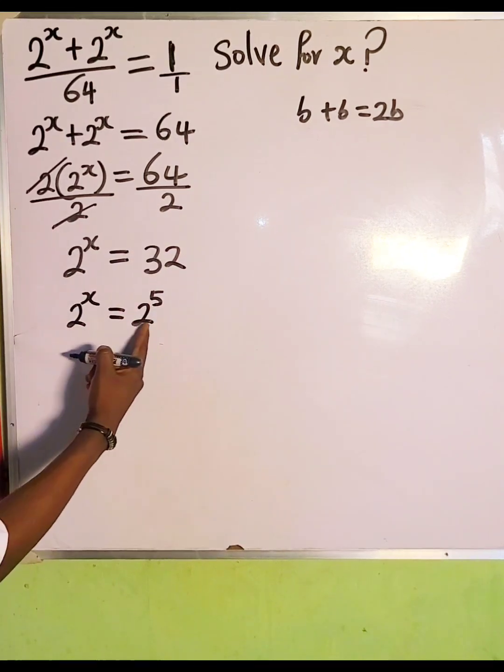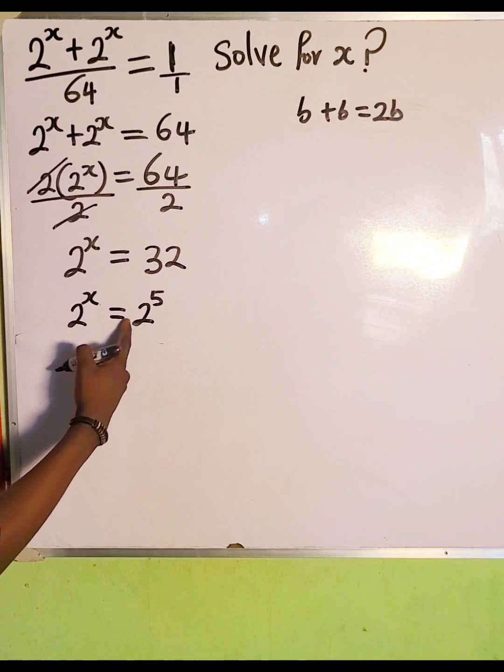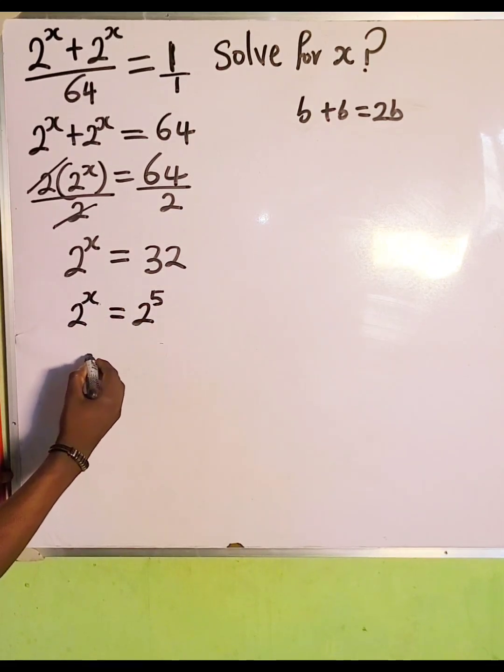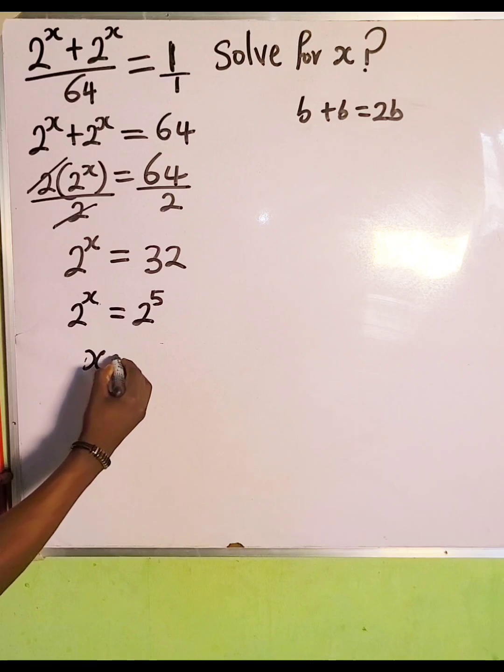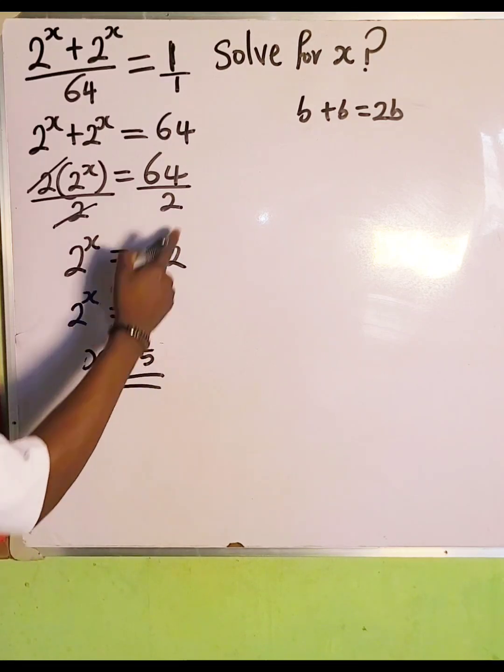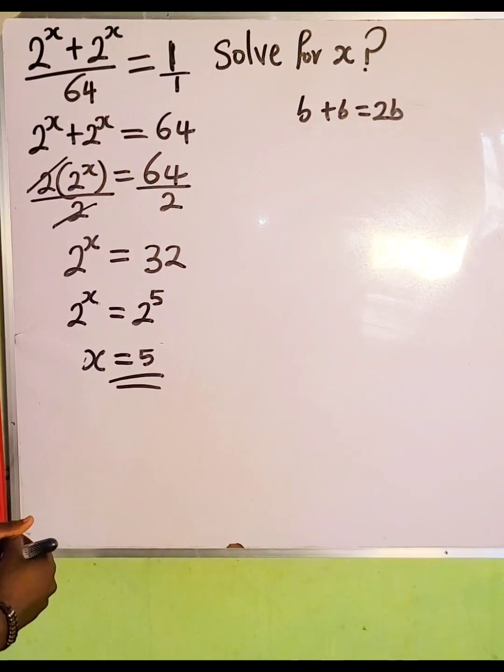And recall, when you have the same base and there's an equality sign, then the exponents are also the same. So we're going to equate the exponents. So the first one is x, which is equal to the second exponent, which is 5. Therefore, 5 is the value of x that satisfies this exponential equation.